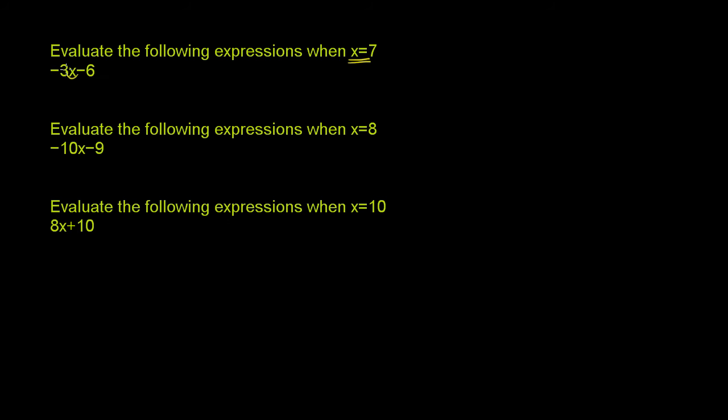So wherever we see the x, that is now going to be equal to 7. So this is the same thing as negative 3 times 7 minus 6.